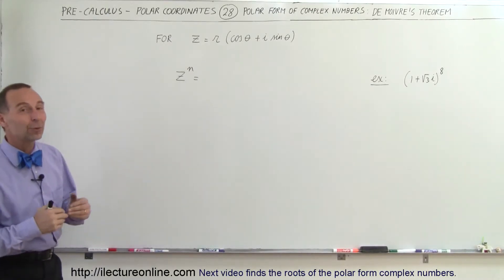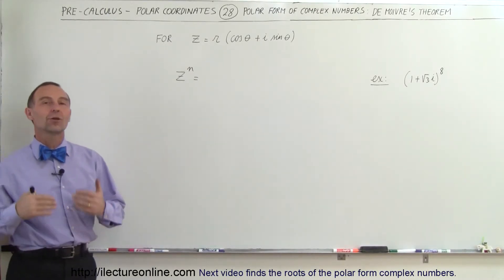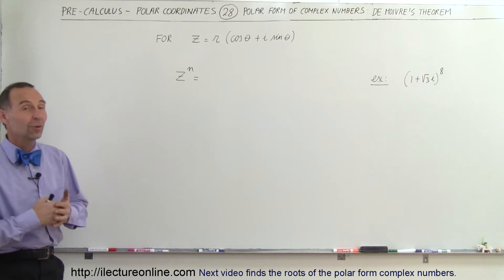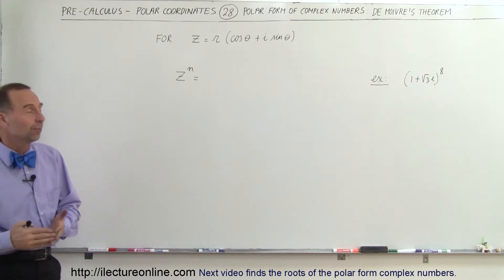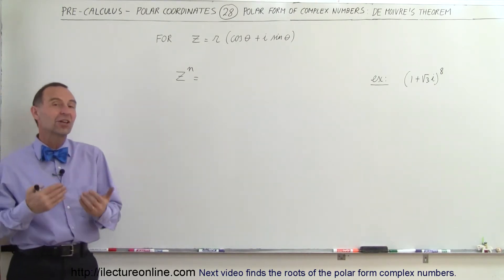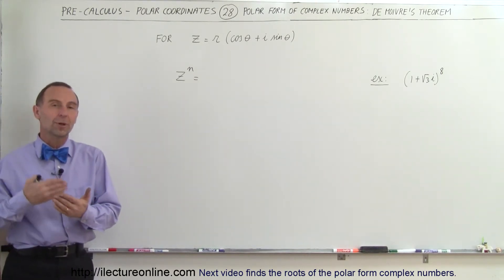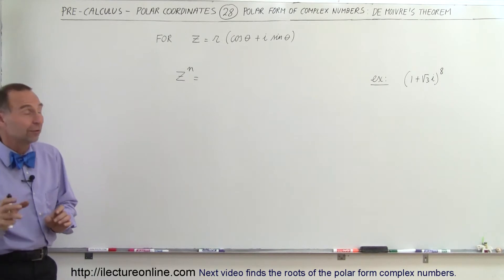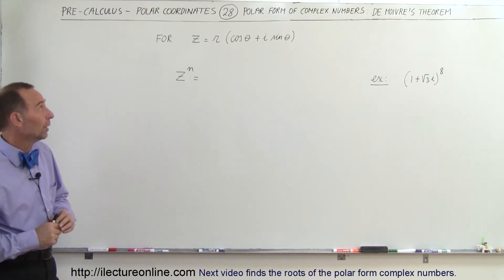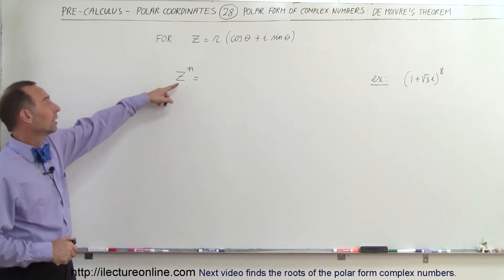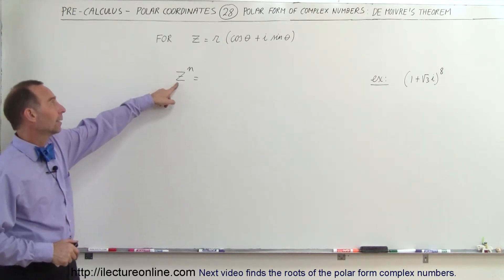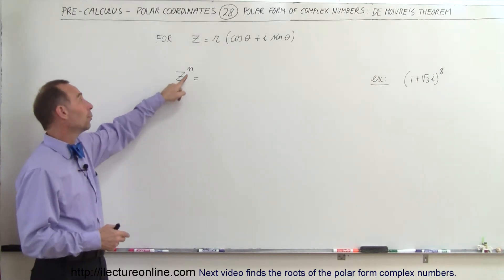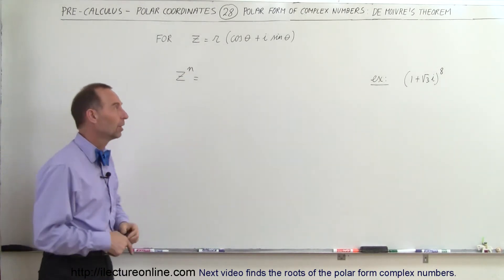Welcome to ElectronLine. Now we're going to take a look at de Moivre's Theorem. It turns out that it's an extension of the multiplication of two complex numbers when they're in polar form. We're now going to extend to taking a complex number in polar form and raising it to any power.